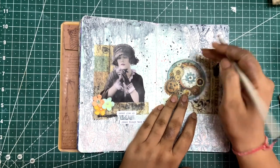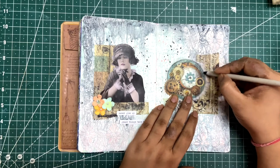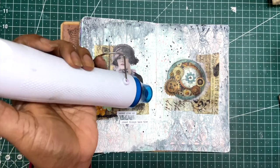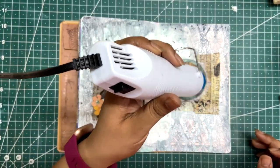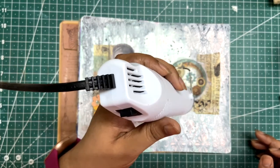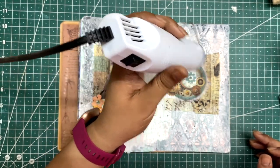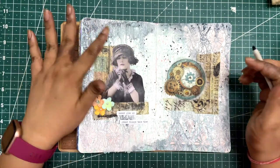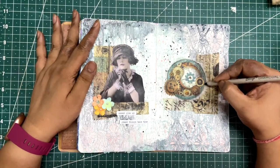Adding some highlights with charcoal pencil. It was not working so I realized that the matte medium was not dry. I just dried it and after that there was no problem in using the charcoal pencil.